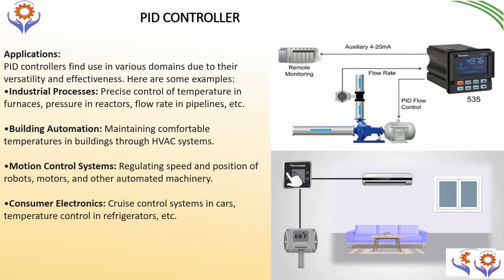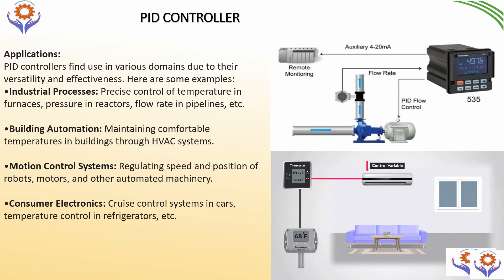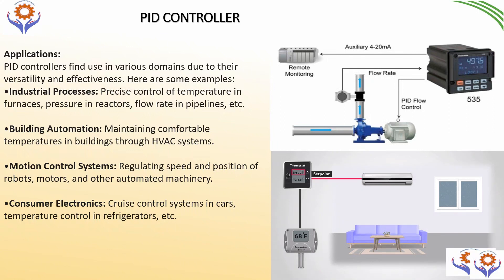For building automations, it is mainly used to control the temperature in BMS systems through HVAC systems. For motion control systems, it regulates speeds and positions of robots, motors, and other automated machinery. We also use it in other applications such as cruise control systems in cars.